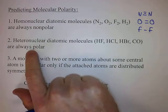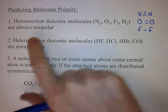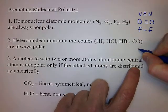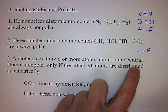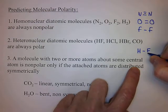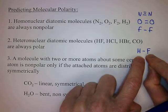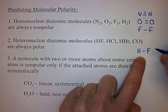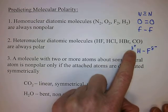Heteronuclear diatomic molecules are always polar. Diatomic means two atoms, but hetero means different, so the two bonded atoms are different: HF, HCl, HBr. If you have an H bonded to an F, that's very different than F bonded to F, because the two bonded atoms are different. That electron pair is not shared evenly — electrons spend more time with the fluorine because fluorine is more electronegative. So you wind up with a partial negative charge on the fluorine and a partial positive charge on the hydrogen.